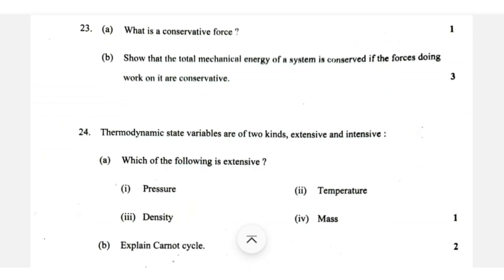Work energy and power: conservative force. The work done by a conservative force is independent of the path followed by the object. They are central forces. Work done for a round trip by a conservative force is zero. Examples: gravitational force, elastic force, magnetic force. Mechanical energy conservation: mgh plus kinetic energy — derivation.